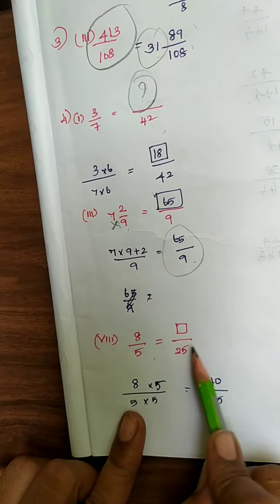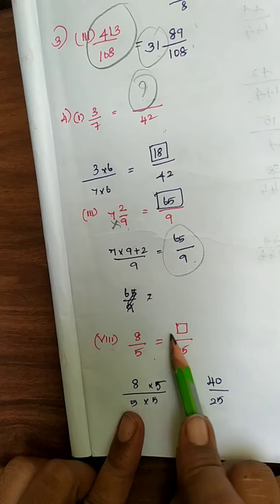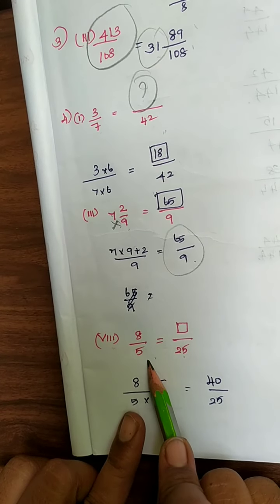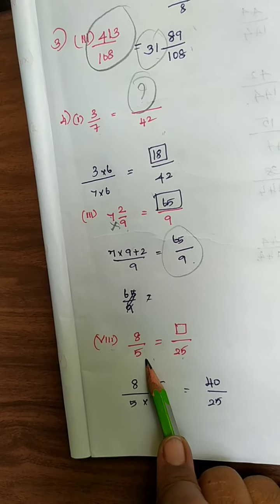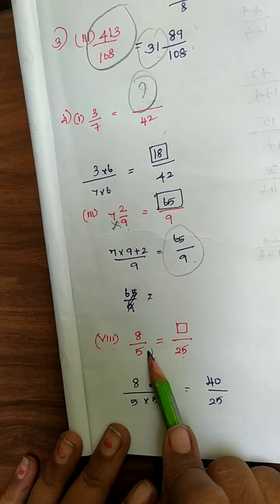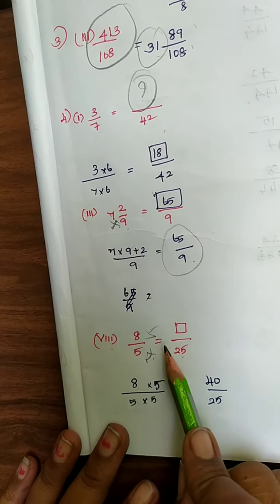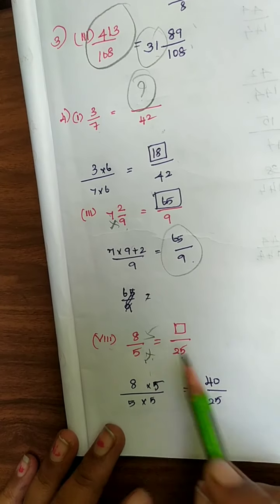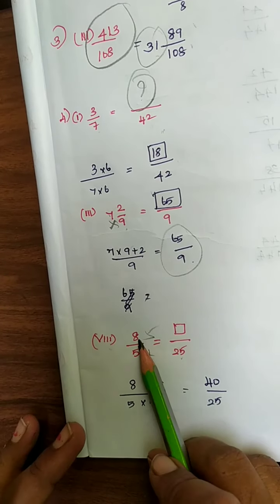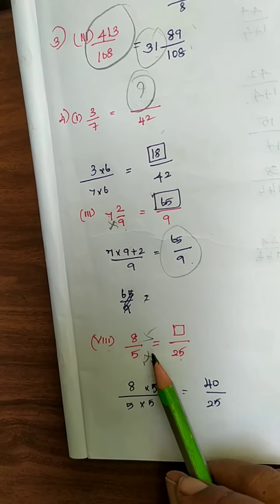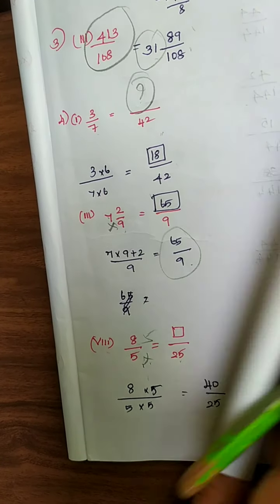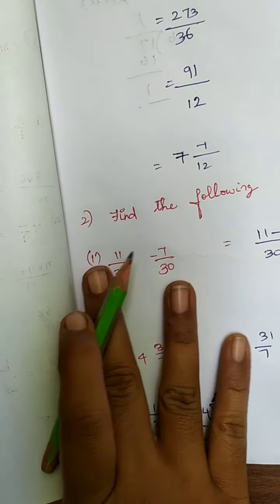8 by 5 equals dash by 25. When will 5 become 25? Multiplying both numerator and denominator by 5: 5 fives are 25. So numerator: 8 fives are 40. Your answer is 40 by 25.